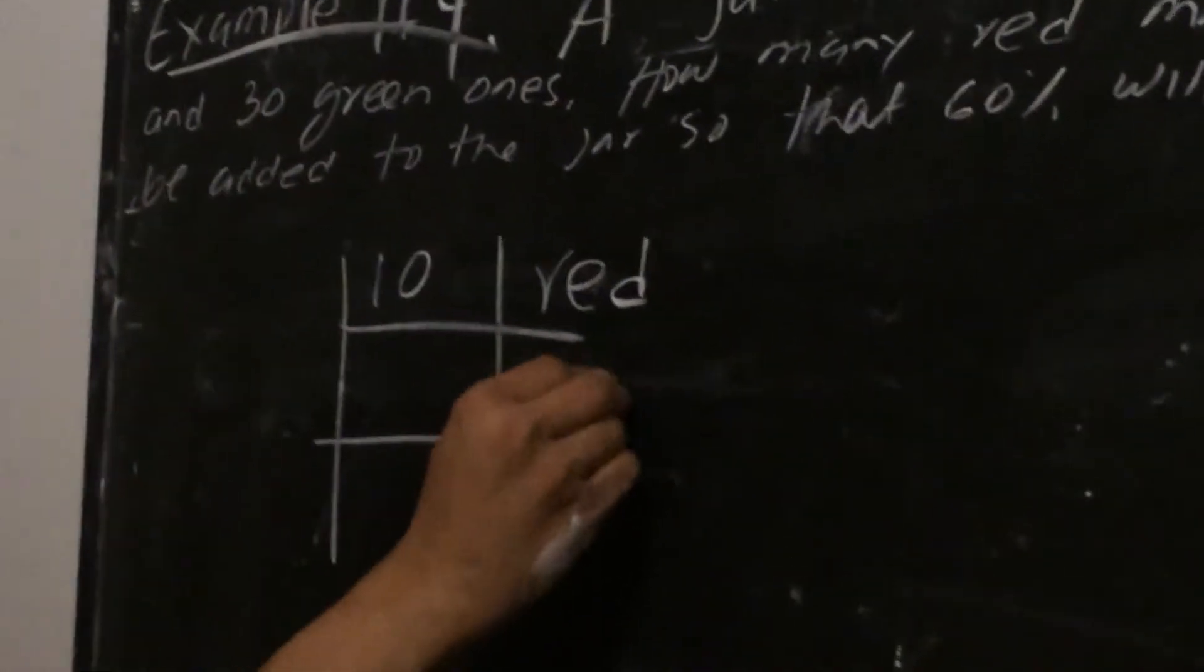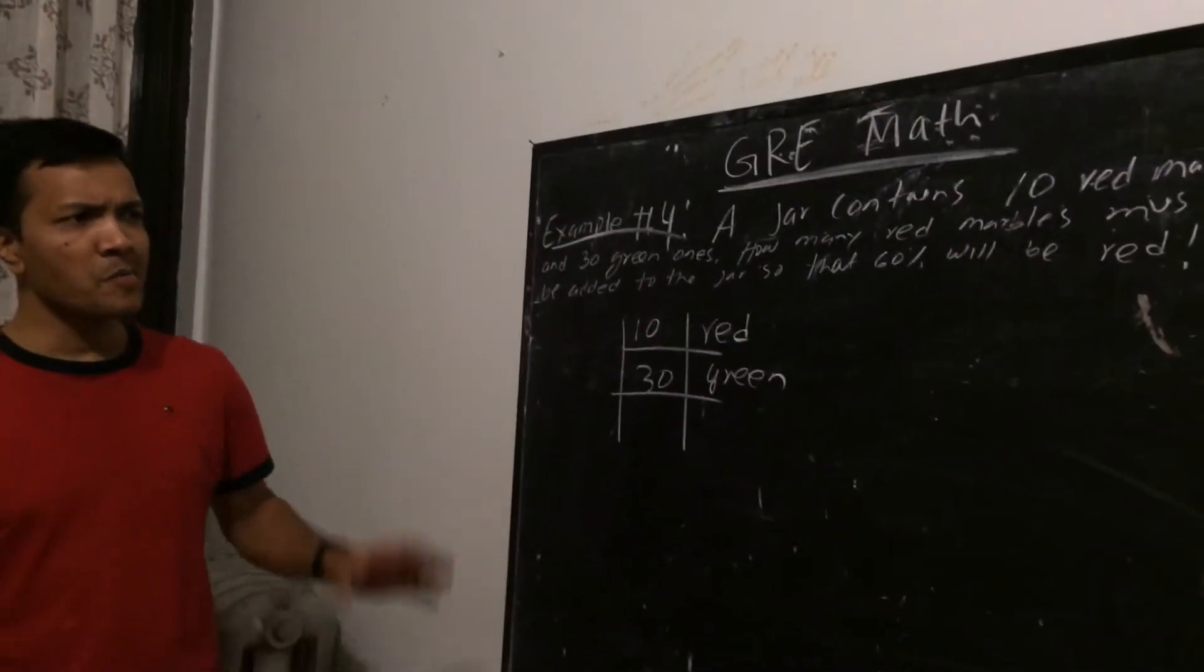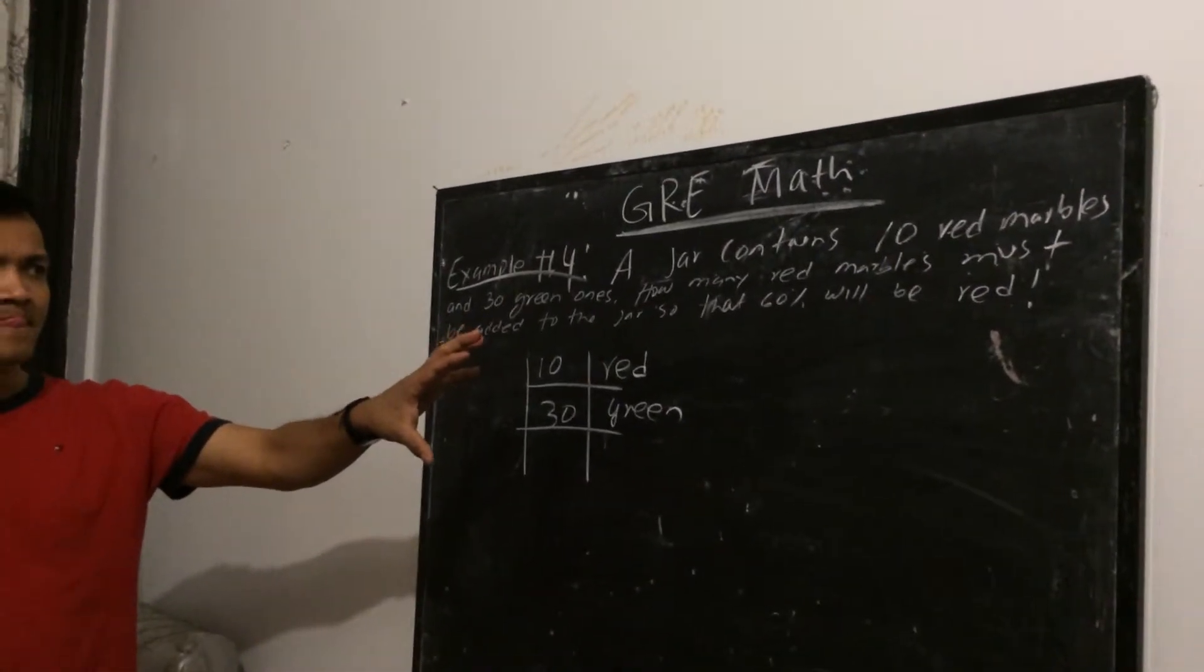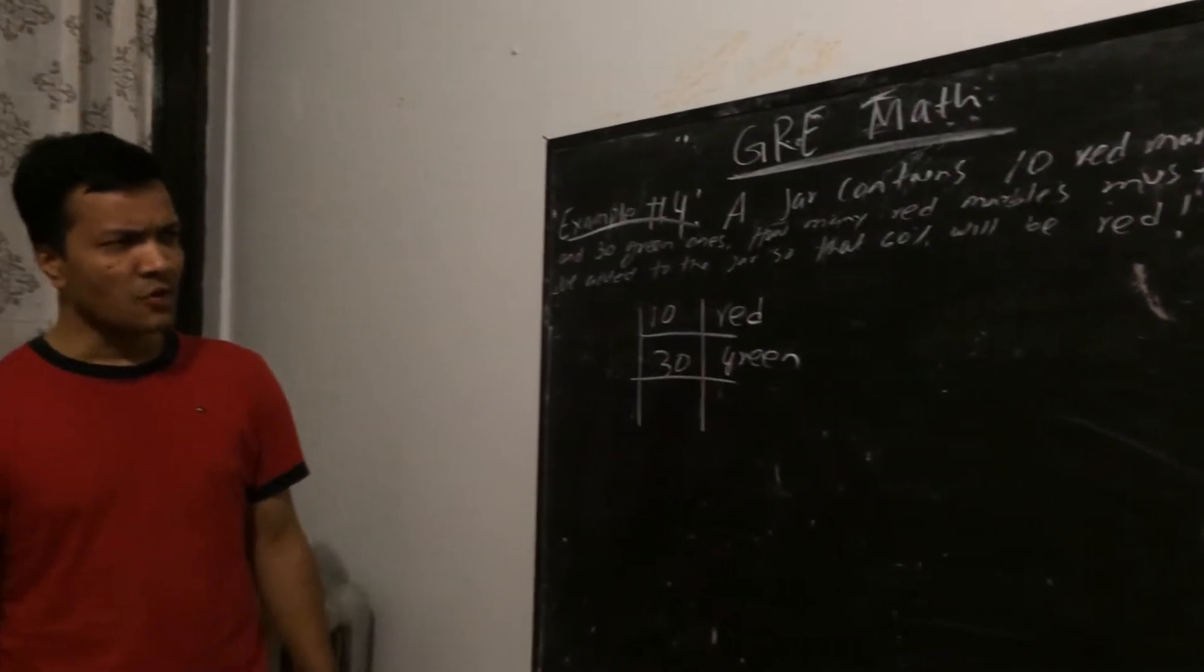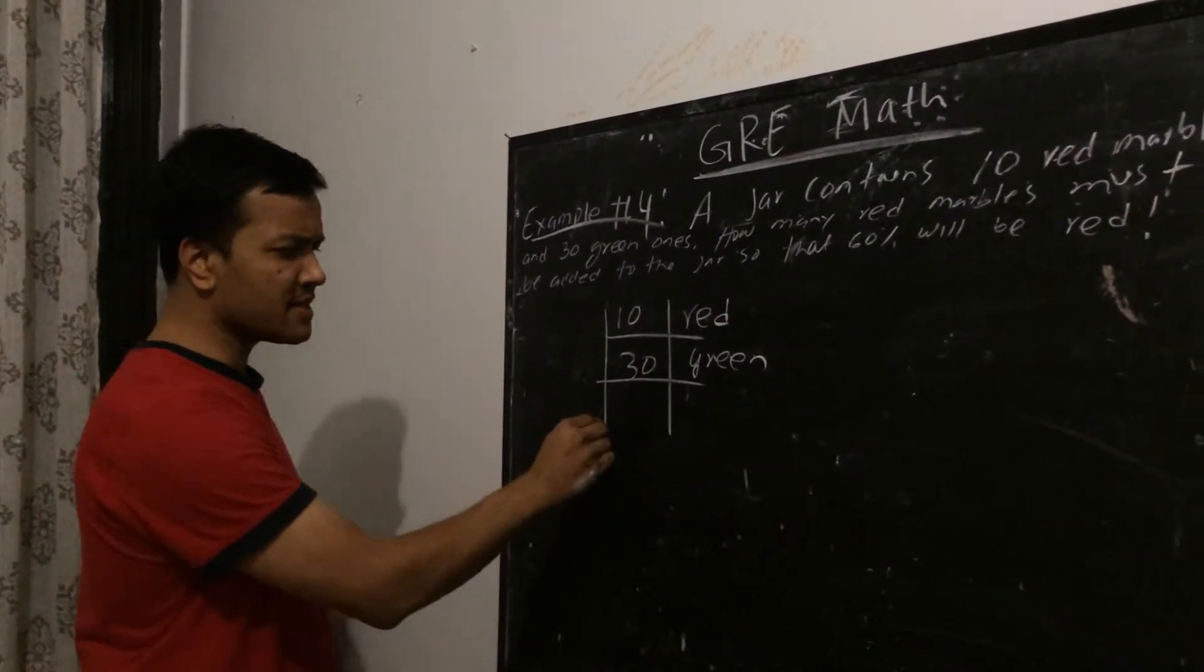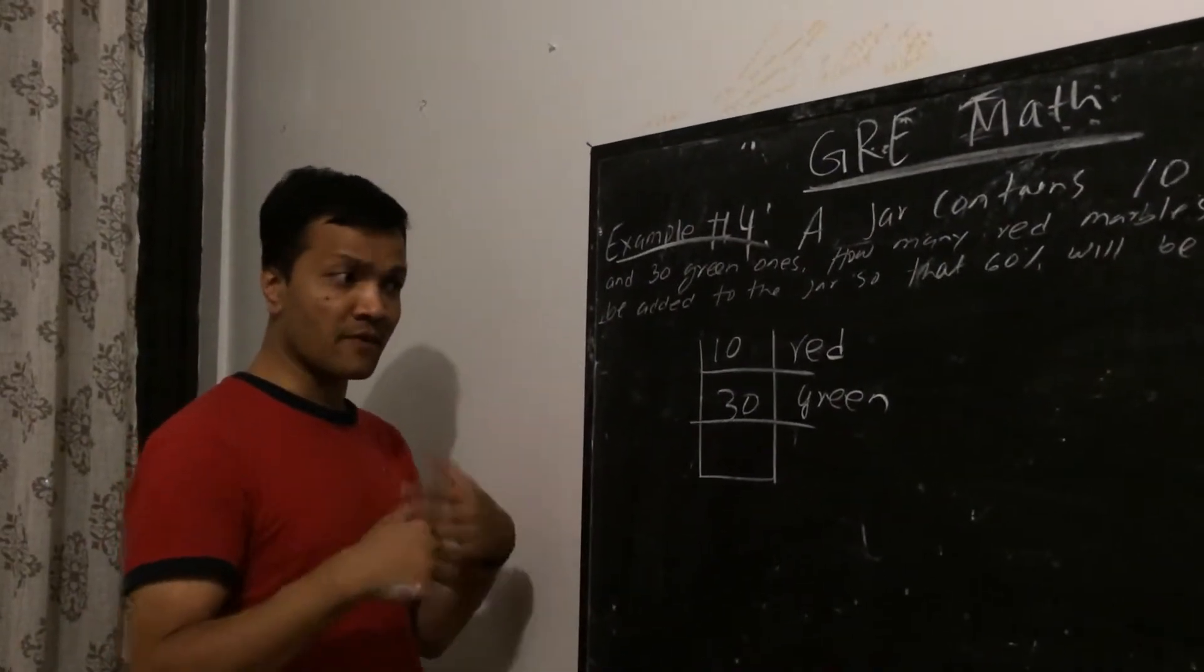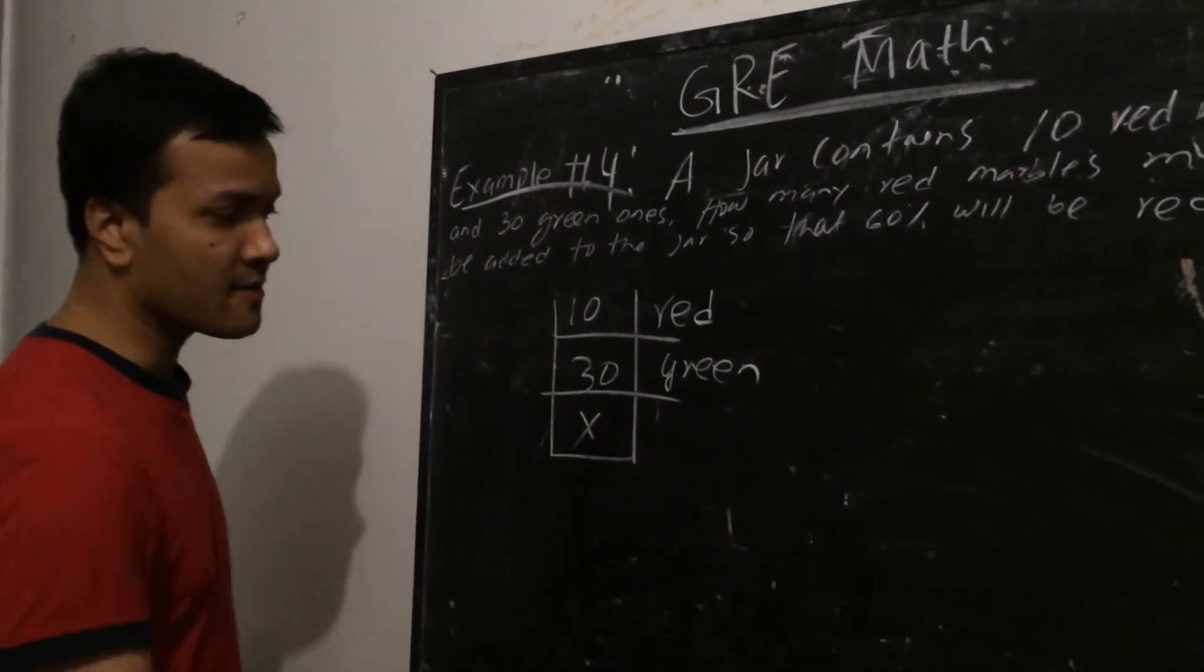So 30 green marbles. How many red marbles must be added to the jar so that 60% will be red? So how many red, how many more red we have to put in this jar so that 60% of the total marbles would be red? So let's actually represent that missing red.